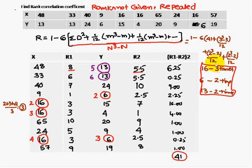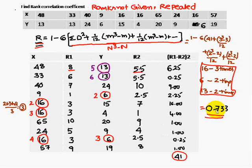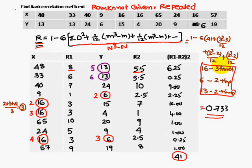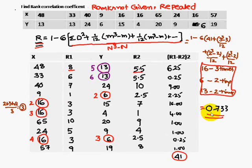For each group of repeated values appearing twice, we add (2³ − 2)/12. Substituting everything into the formula — 1 minus 6 times [sigma d square + correction terms] divided by (n³ − n), where n = 10, so the denominator is 10³ − 10 — we get the rank correlation coefficient as 0.733.